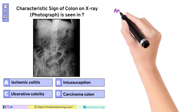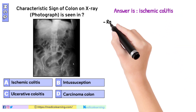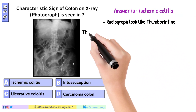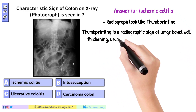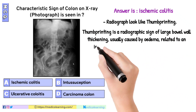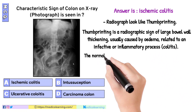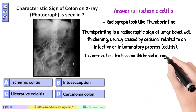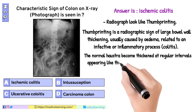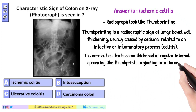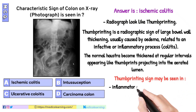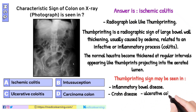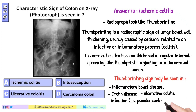In this question the answer is Ischemic colitis. The radiograph shows thumbprinting. Thumbprinting is a radiographic sign of large bowel wall thickening, usually caused by edema related to an infective or inflammatory process. In colitis, the normal haustra become thickened at regular intervals, appearing like thumbprints projecting into the aerated lumen. Thumbprinting may be seen in inflammatory bowel disease, Crohn disease, ulcerative colitis, infection such as pseudomembranous colitis, ischemic bowel, and diverticulitis.